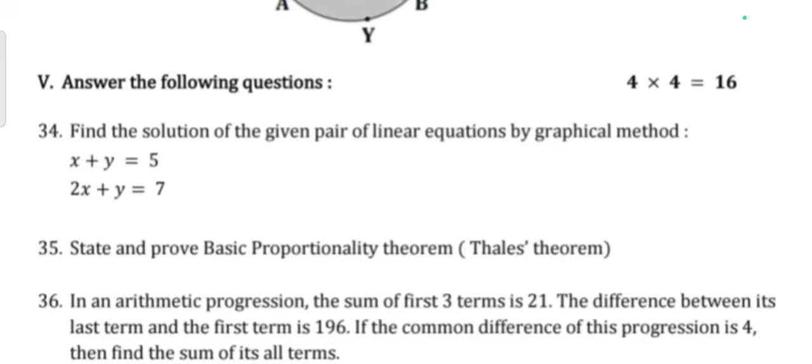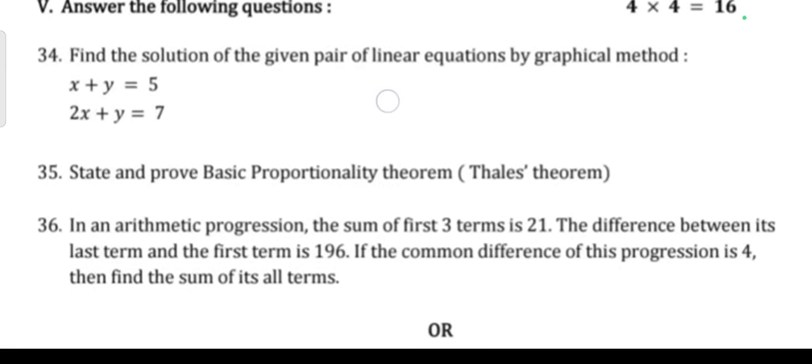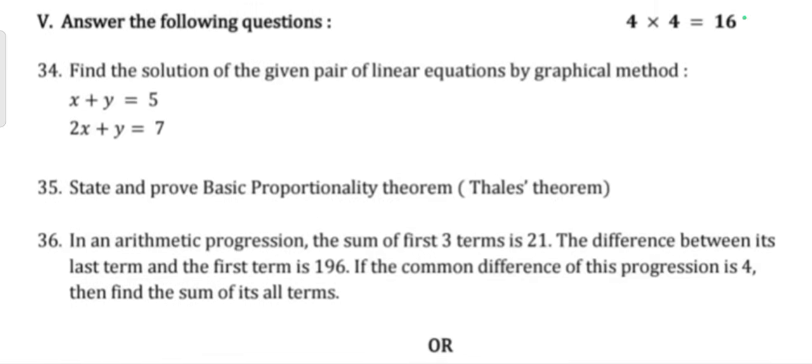Next question for four marks: Find the solution of the given pair of linear equations by graphical method: x plus y is equal to 5, 2x plus y is equal to 7. Question 35: State and prove the basic proportionality theorem or Thales theorem. Question 36: In an arithmetic progression, the sum of the first three terms is 21. The difference between its last term and first term is 196. If the common difference of this progression is 4, then find the sum of all its terms.